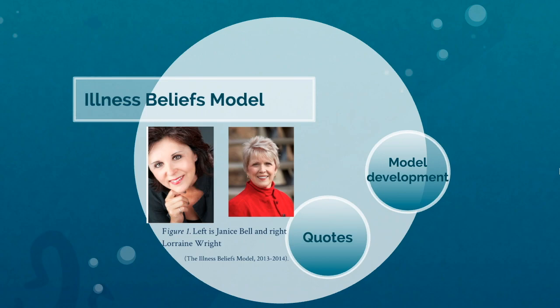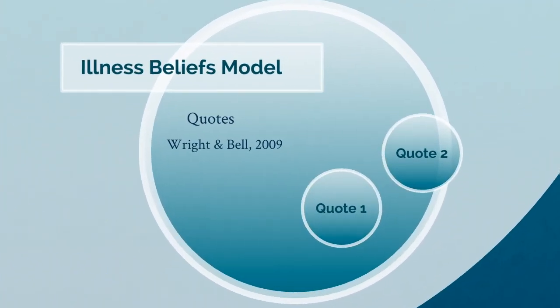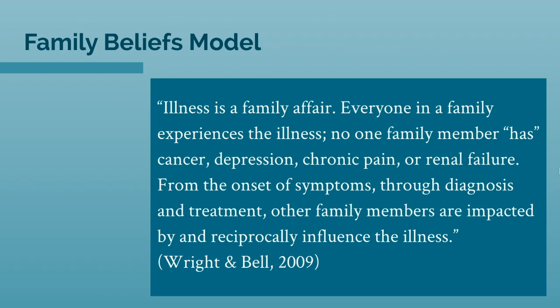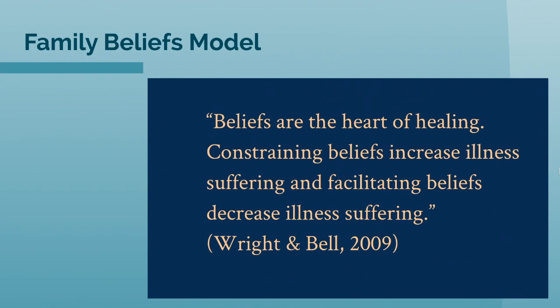In order to aid in understanding of the Illness Beliefs Model, I'd like to start with two quotes. The first: illness is a family affair. Everyone in a family experiences the illness. No one family member has cancer, depression, chronic pain, or renal failure. From the onset of symptoms through diagnosis and treatment, other family members are impacted by and reciprocally influence the illness. Beliefs are at the heart of healing. Constraining beliefs increase illness suffering and facilitating beliefs decrease illness suffering.